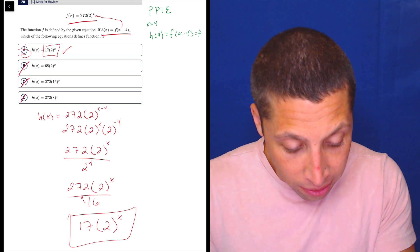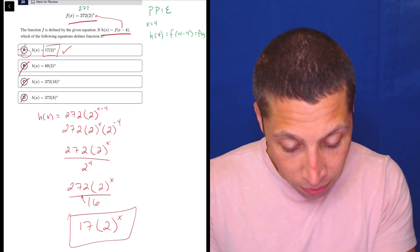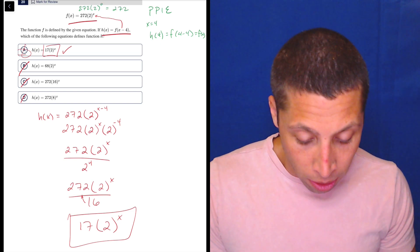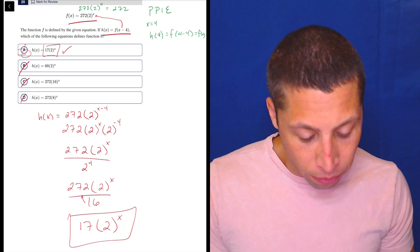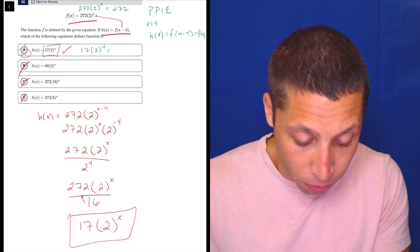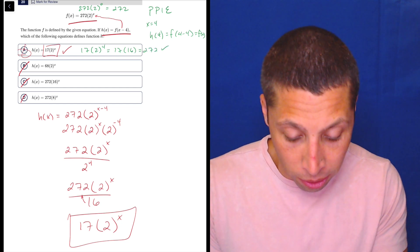because 4 minus 4 is 0. So, f of 0 is easy. 272 times 2 to the 0 is 272. So, that works. So, what I'd be looking for, then, is to put 4 into this and see what happens. So, 17 times 2 to the 4th, that's 17 times 16. We already saw that that's 272. So, that works.